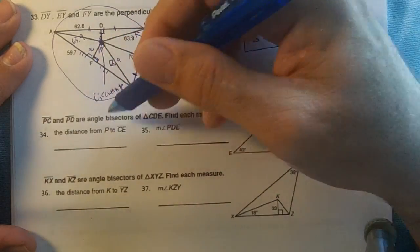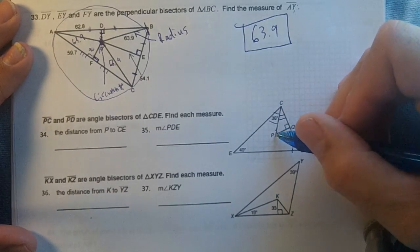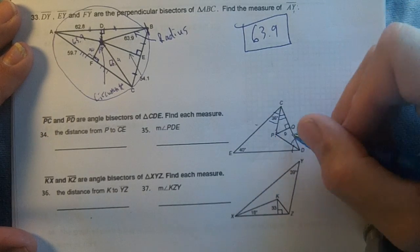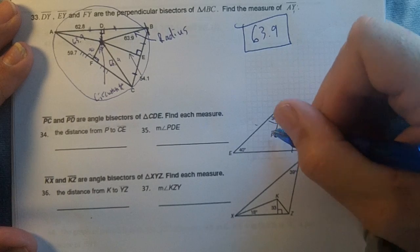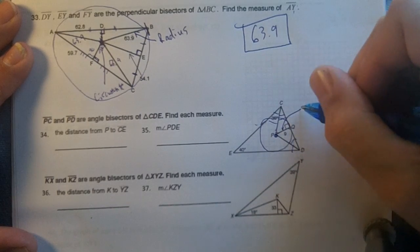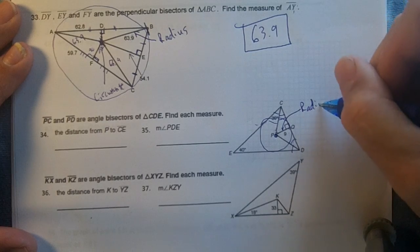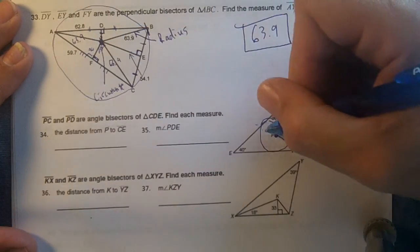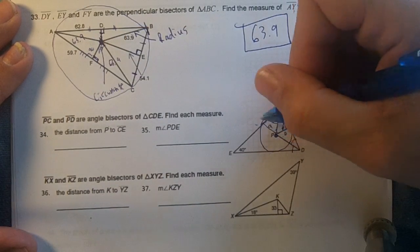Find the measure of each, the distance from P to CE. P to CE is going to be the same as this. Remember, this edge right here is the radius. So from P to CE would be just like this, it would be 9.